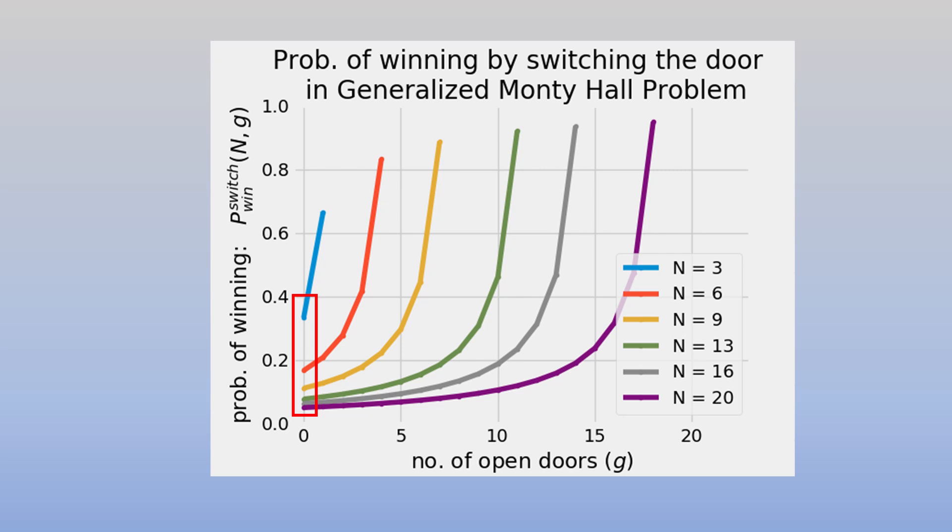The main observation is that all the functions are increasing. This means that switching the door is always a better strategy. However, when the number of doors is large and G is small, for example, when N is equal to 20 and G is between one and five, the chance of winning does not increase that much if we switch the door. As you can see, the curve is almost horizontal. For N equals to three and G equals to one, we get 0.66, which is equal to two thirds, what we found for our first problem. In general, the chance of winning significantly increases when the number of doors or G gets closer to N. This is what we expect.